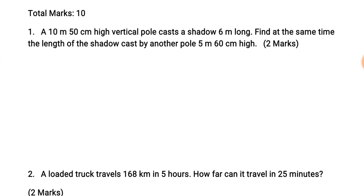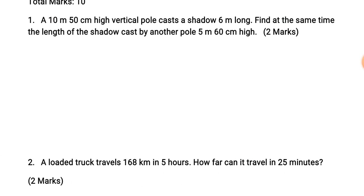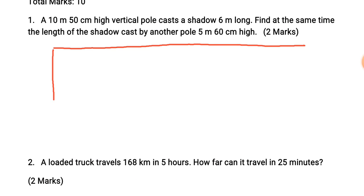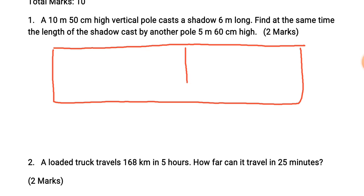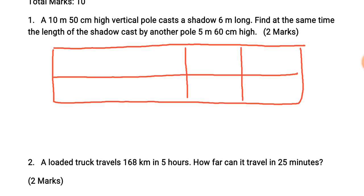If anyone has a question about what we do in direct and inverse proportion — first of all, we make a table. Our question is easy from a table, so first you have to draw a table. The two quantities are: first, the height of the pole, and the other, the length of the shadow. The first column is the height of the pole.